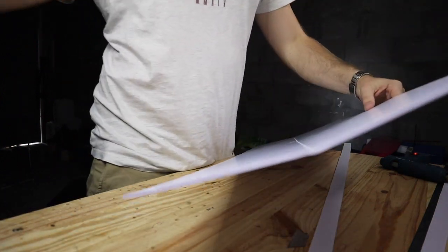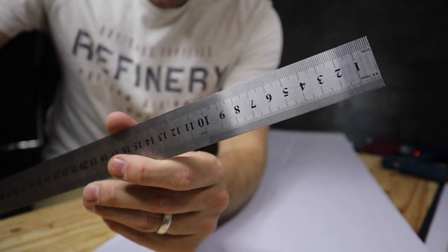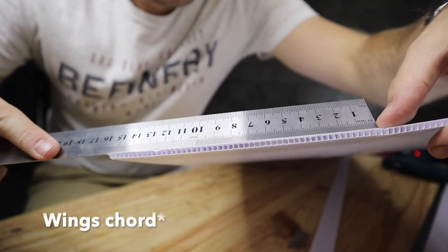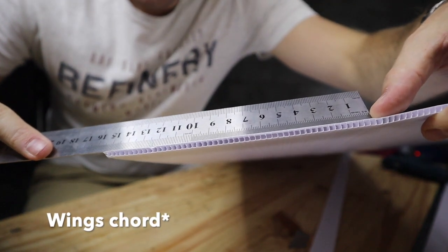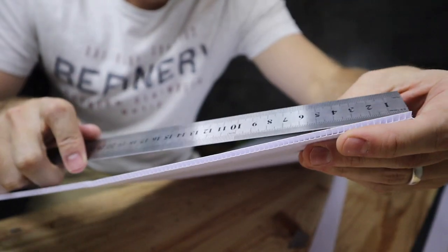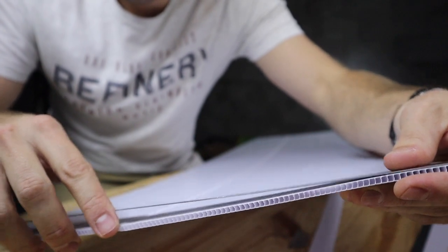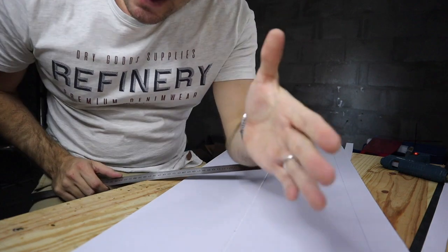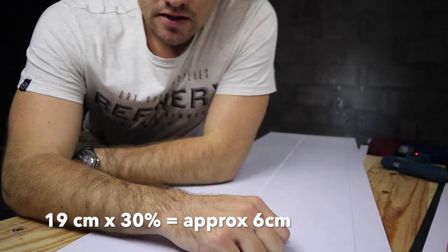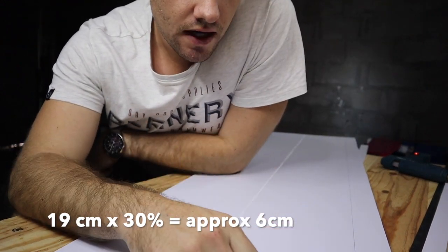It's also very important to measure your aircraft's chord. In this case it's 15 plus we're actually going to have an additional 4, so 19 centimeters for the wing chord from the leading edge to the trailing edge.